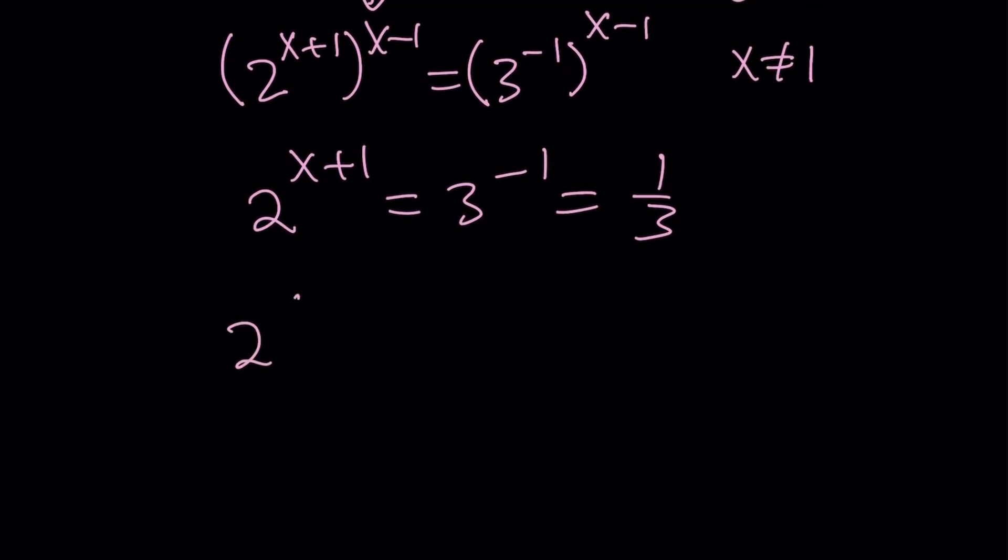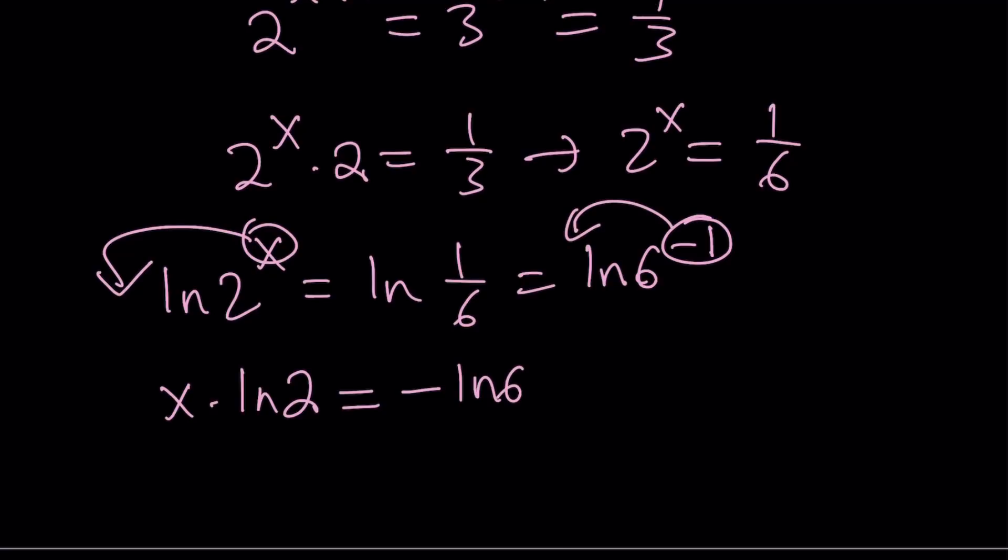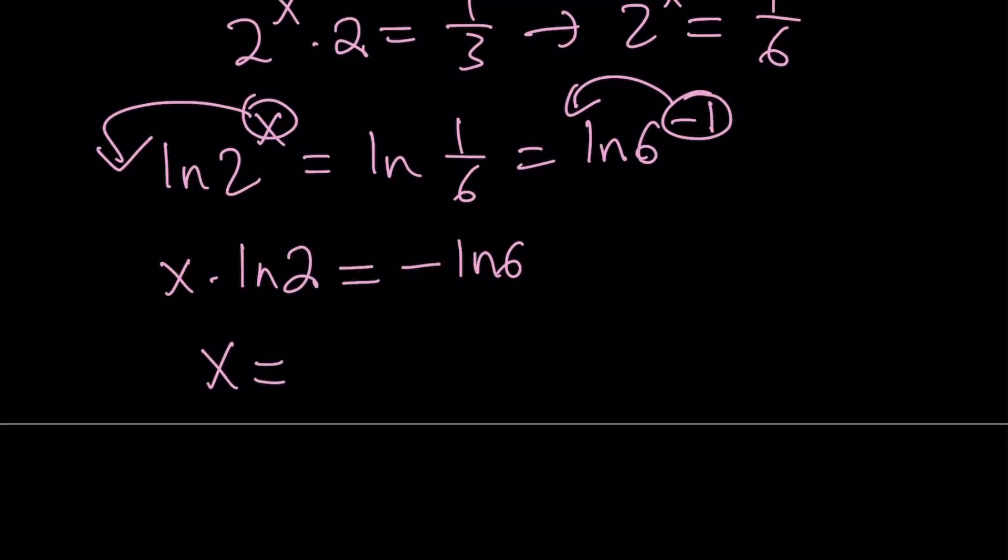We can write this as 2^x · 2 = 1/3. My goal is to isolate 2^x, so 2^x = 1/6. By using logs, I have to use it at this point because 1/6 is not an integer power of 2. xln2 = ln(1/6) = -ln6. Dividing both sides by ln2, you get x = -ln6/ln2.